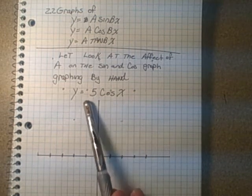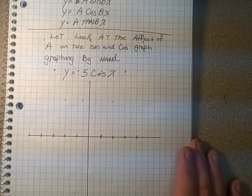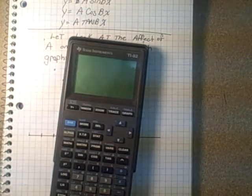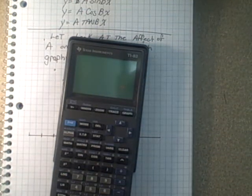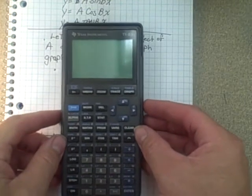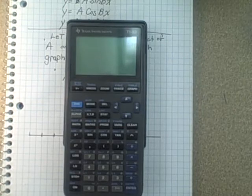But what we need to do is try to understand what happens to the 5, what effect does that 5 have on our cos graph. So I'm going to zoom in here on this calculator.